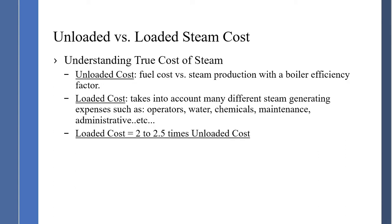Understanding unloaded and loaded costs — loaded costs take in all steam generating expenses: operator, water, chemical, maintenance, administration, all aspects of operation. So if we calculate out $5.40 as the unloaded cost, loaded costs are usually two to two-and-a-half times that unloaded cost, which would be almost $10 — over $10 per thousand pounds of steam.